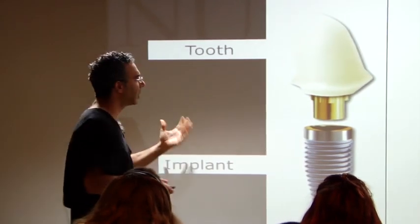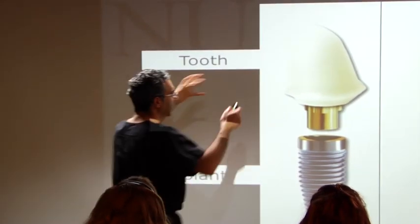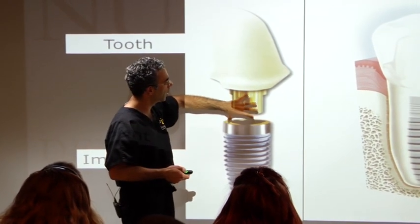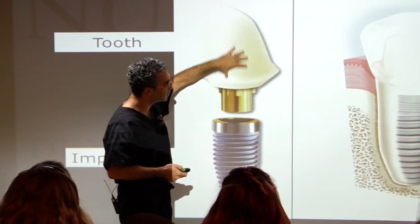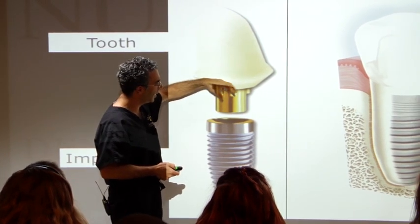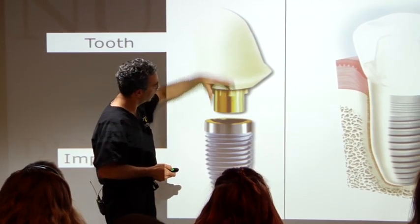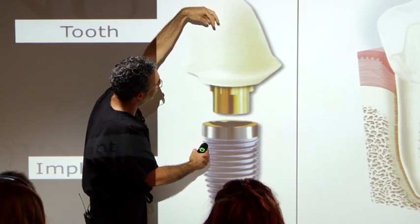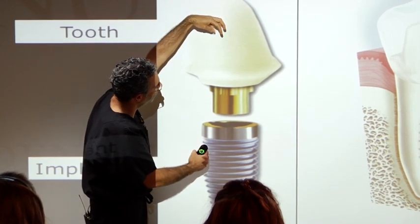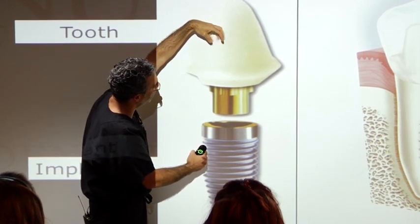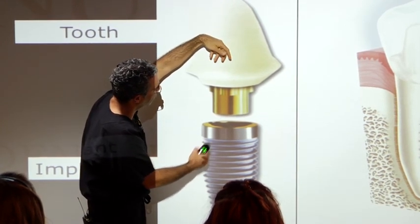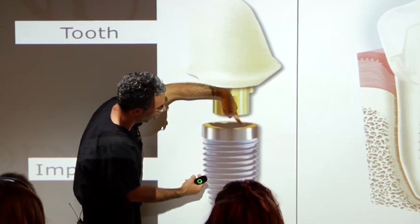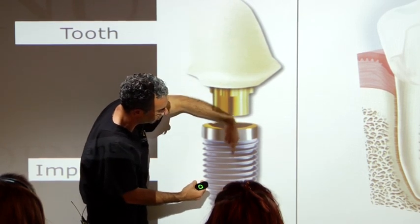On top of that post, we build up the structure. We place another component called an abutment, which slides into the implant and gets positioned into place by a small screw that goes down inside. The implant is internally tapped, so the screw secures the abutment to the implant.